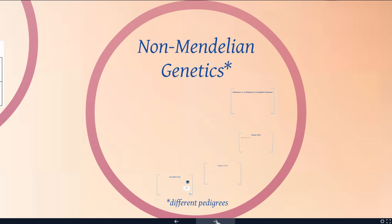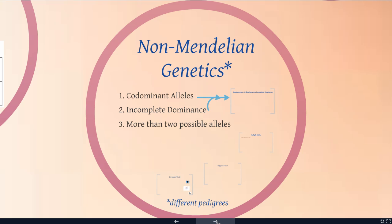So far we've been talking about basic dominant recessive allele interactions. However, there are alternative ways for alleles to interact, and we refer to some of those alternatives as non-Mendelian genetics. We can have co-dominant alleles, we can have incomplete dominance, we can have situations where there's more than just two alleles, we can have polygenic traits, and we can have sex-linked traits. We're going to go through and briefly describe each one of these.